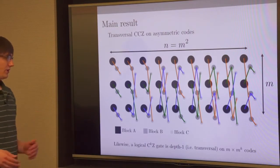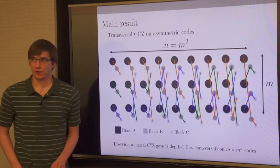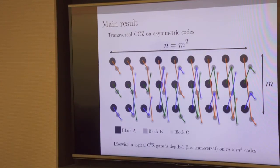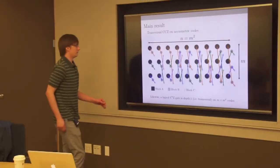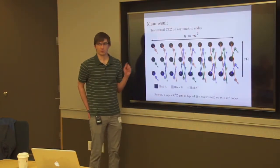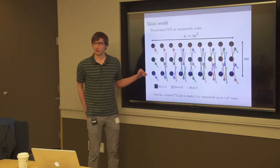You can also generalize this construction to k-qubit controlled-Z on an m-by-mᵏ lattice. We're doing a logical CCZ gate, and every Bacon-Shor code block encodes one logical qubit, so we need three code blocks of Bacon-Shor. Each code block is a different size visually, but they're all qubits.